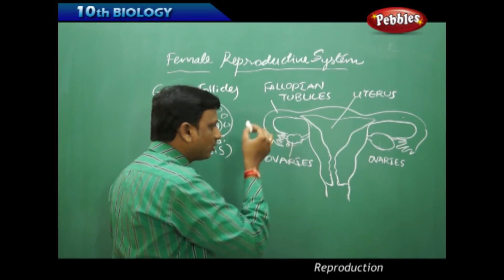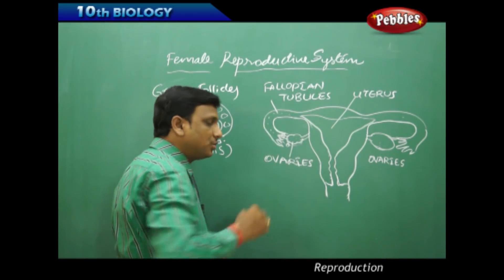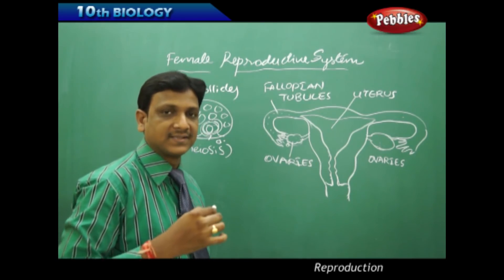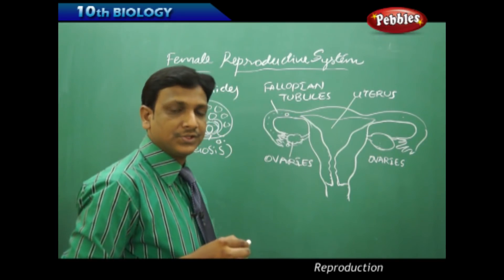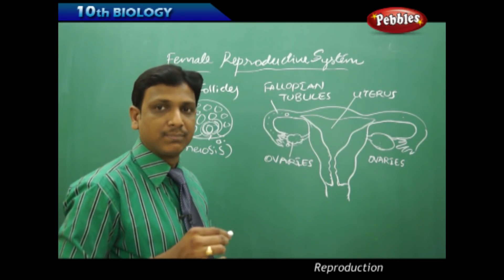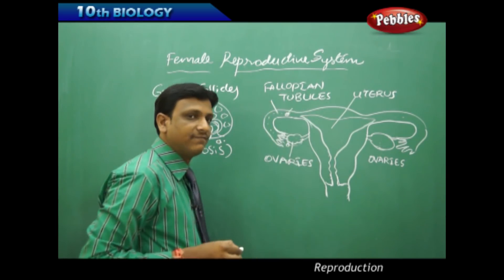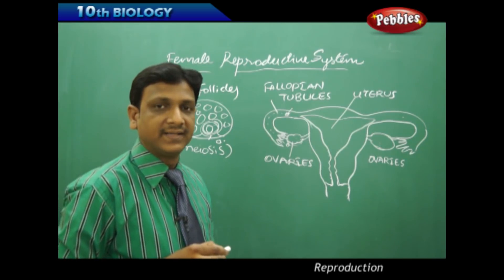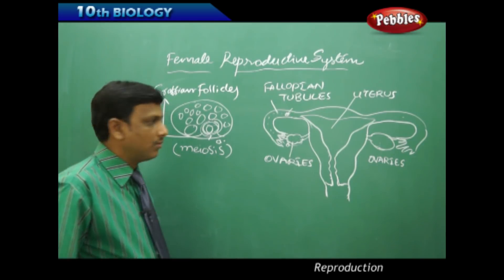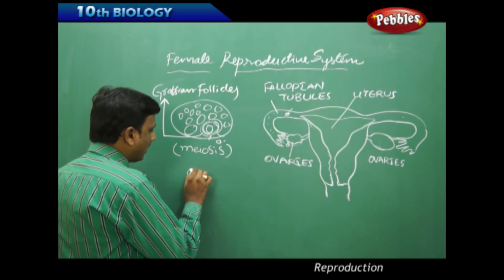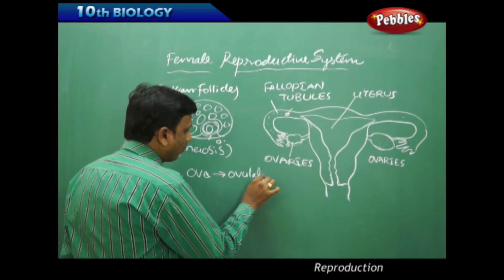The ova released from the ovary is collected into the funnel-like structure and enters the fallopian tubule. The ova passes into the oviduct, that is the fallopian tubule. Inside the fallopian tubule, fertilization takes place — the male gametes fuse with the female gametes. The release of the ova or egg cells is called ovulation.